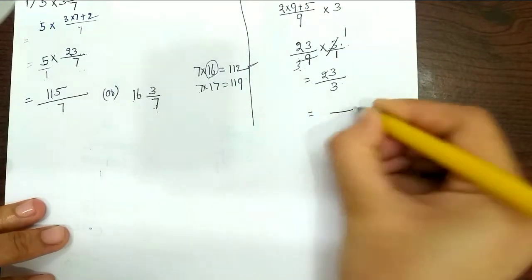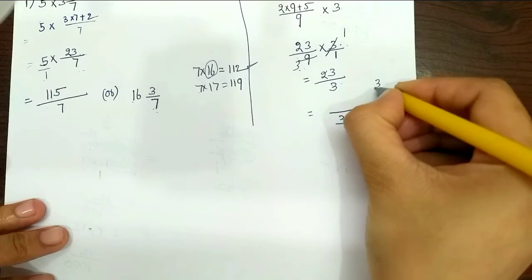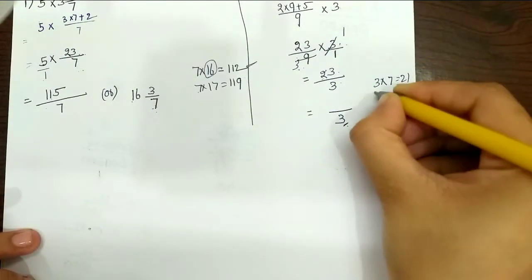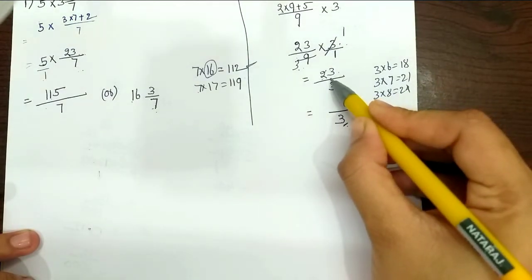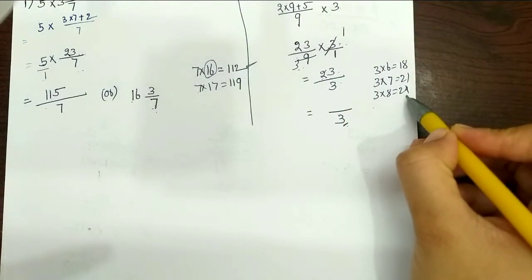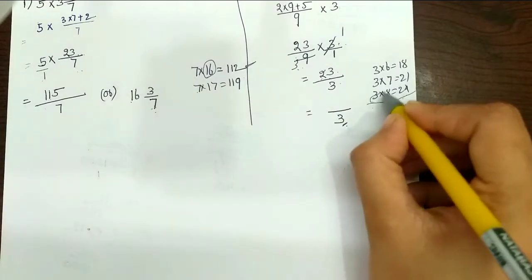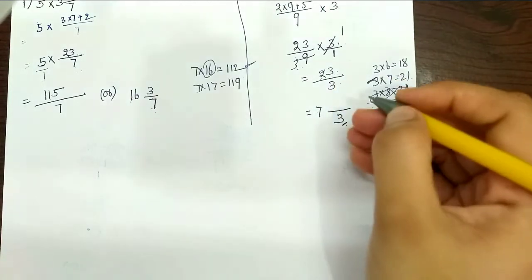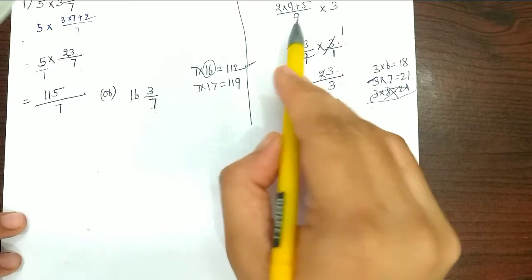In case you can convert to a mixed fraction — 23 by 3. The denominator is 3, so we look in the 3 times table. 3 times 7 is 21, 3 times 8 is 24. The nearest number to 23 in the 3 times table is 21. 23 minus 21 is 2. So the answer is 7 and 2/3.